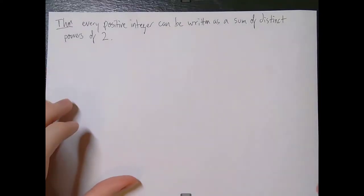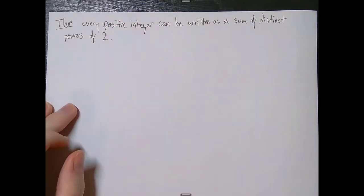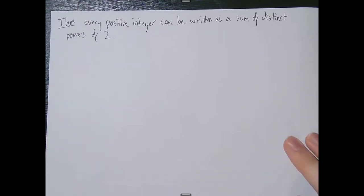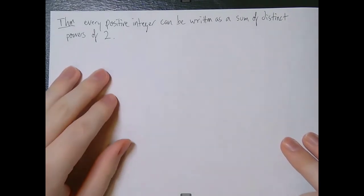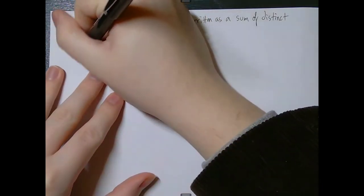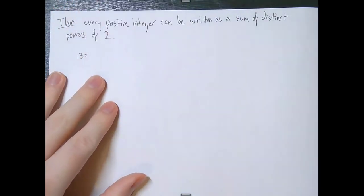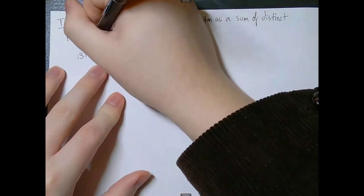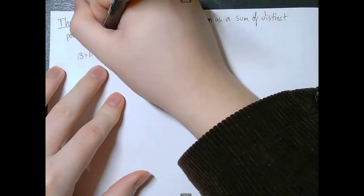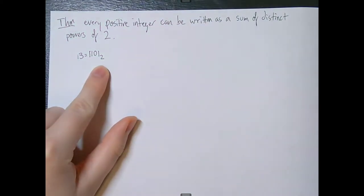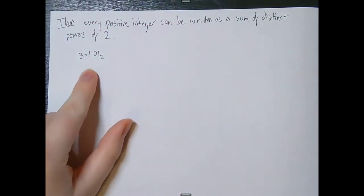Here's our theorem: every positive integer can be written as a sum of distinct powers of two. This is a big one, so let's break it down by thinking in terms of binary numbers. Take 13 for example. In binary, 13 is 1101 base 2, which means 1 times 2 cubed plus 1 times 2 squared plus 0 times 2 to the first plus 1 times 2 to the zero. The subscript 2 denotes we're writing in base 2, and we can assume there are no additional leading zeros.